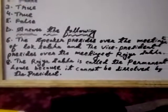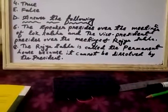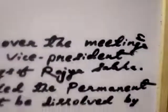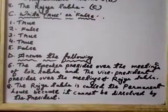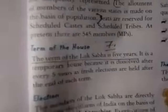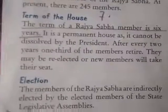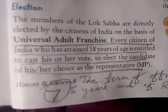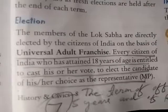Number eight: which house of the parliament is called the permanent house and why? The Rajya Sabha is the permanent house because it cannot be dissolved by the president. Number seven: what is the term of both houses? The term of Lok Sabha is five years. The term of Rajya Sabha is six years. The meaning of universal adult franchise is that every Indian citizen who has attained 18 years of age is entitled to cast his or her vote to elect the candidate of his or her choice as a representative or member of parliament.